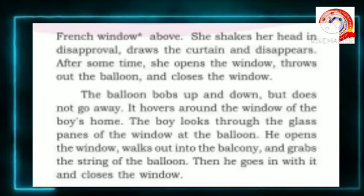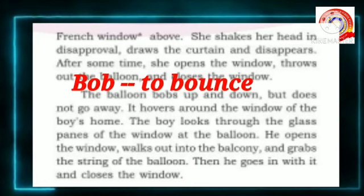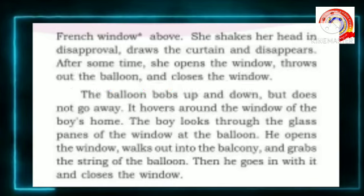When she saw the boy, she shook her head in disapproval. The boy came inside with his balloon. After some time, the mother came there and threw it out of the French window. But the balloon was not ready to go in the air. It bobs up and down. Bobs means to bounce. The balloon bounced up and down and it hovers around the windows of the boy's home.